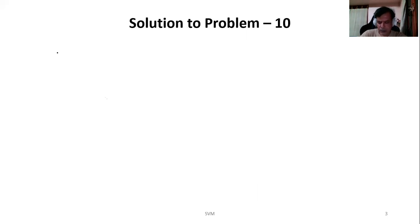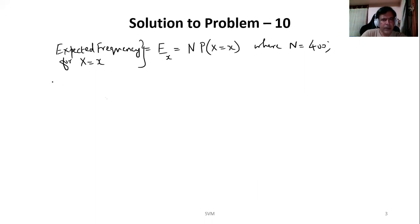Now here we will be finding out the expected frequency. Expected frequency which will be denoted by capital E, can be calculated as capital N times probability of x taking a value small x. So I will put here E suffix small x. Where this capital N is the total frequency, which is given in the question as 400.